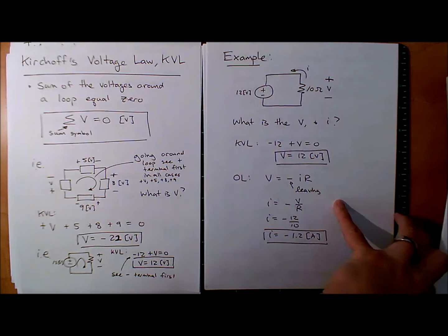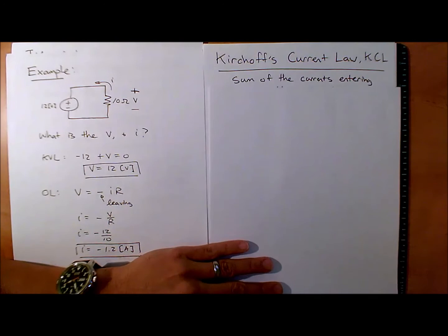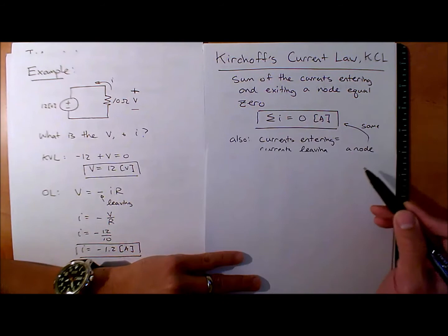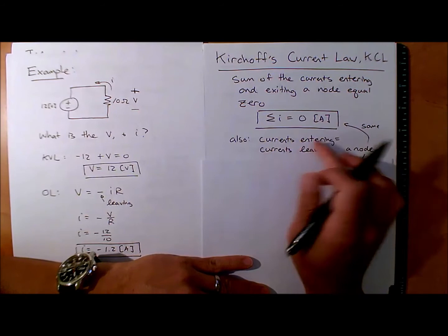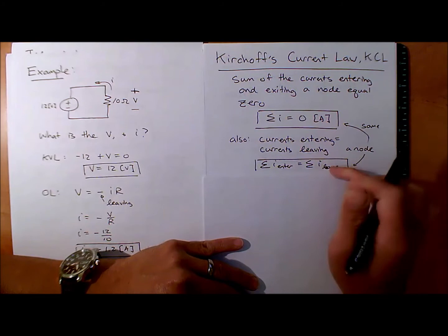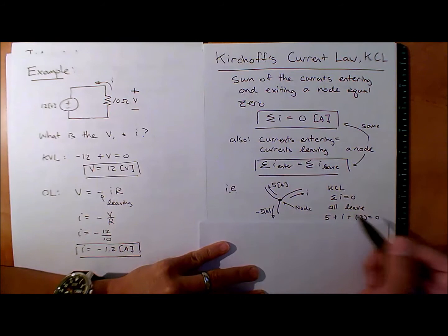The next one is Kirchhoff's current law. The dual of KVL is very similar but for currents. The sum of currents entering and exiting a node equals zero, written as the summation: sum I equals zero. Another way to think of it: currents entering a node equal currents leaving. These are equivalent statements: sum of currents entering equals sum of currents leaving.